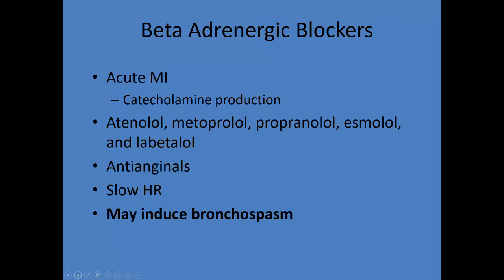Beta-adrenergic blockers are indicated in acute MI for catecholamine production reduction. Common agents include atenolol, metoprolol, and propranolol — if it ends in 'LOL,' it's probably a beta blocker. For patients with angina who aren't having a full MI but have chest pain or ECG suggesting angina, beta blockers can be beneficial. One thing to be aware of is that older beta blockers also inhibit beta-2, which can be problematic for patients with a proclivity toward bronchospasm or a history of asthma.